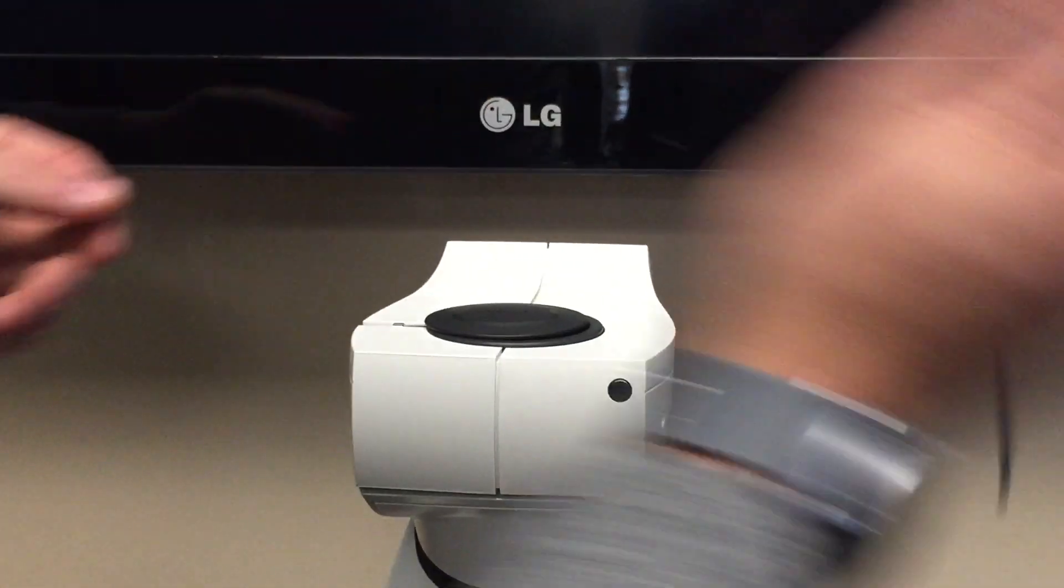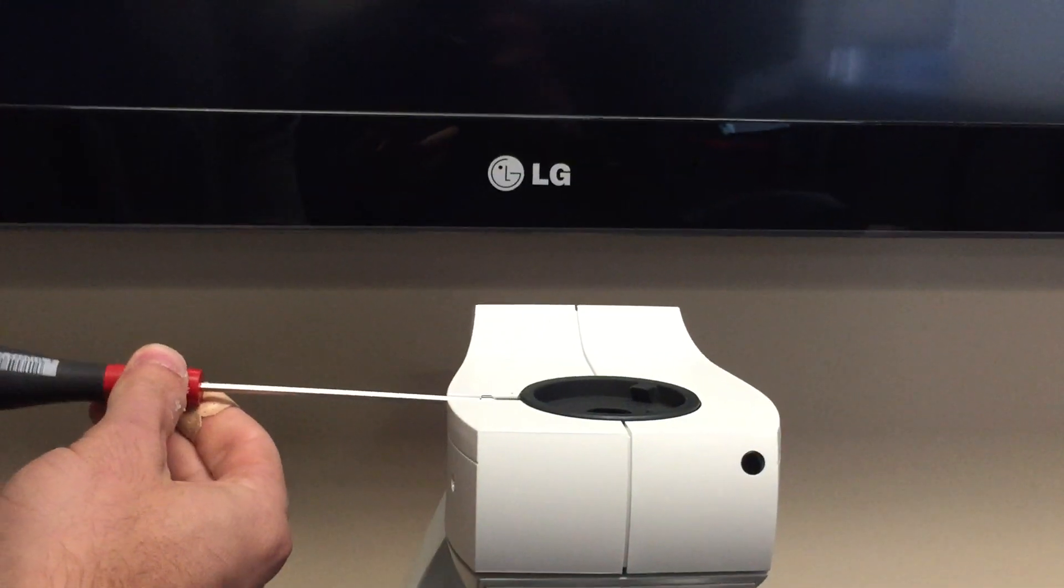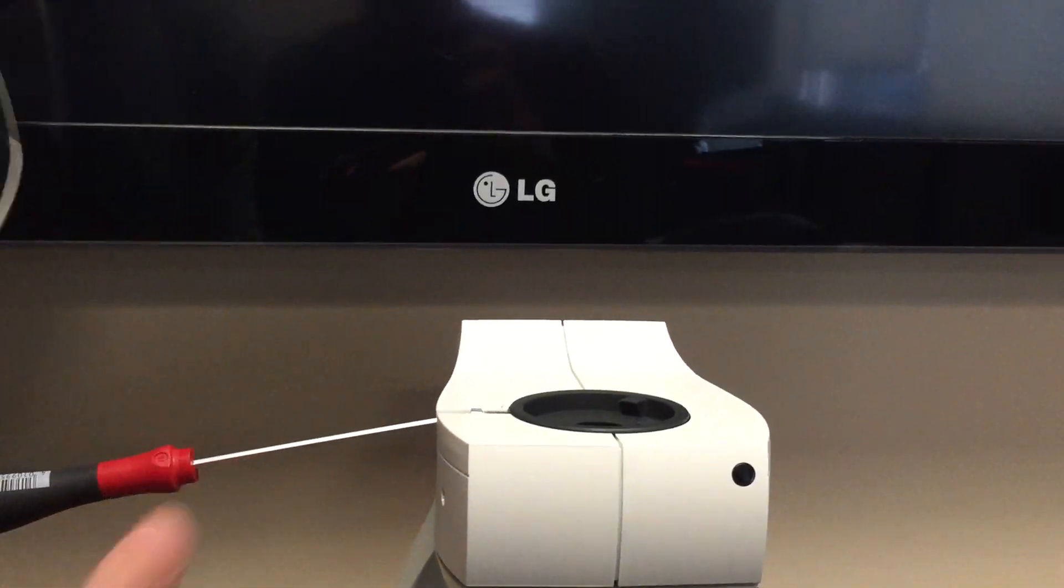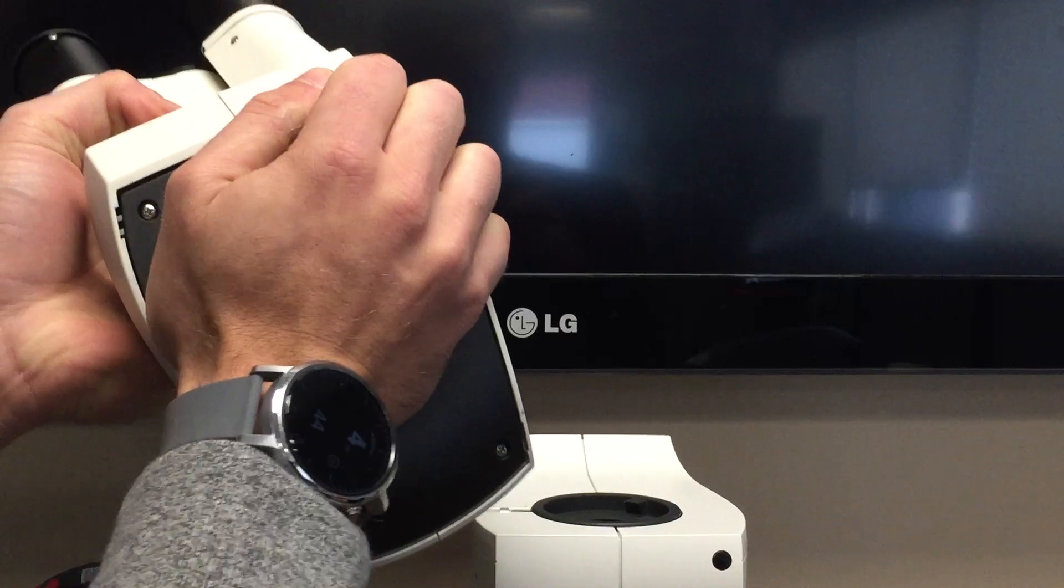From there, you'll do the same thing with the top cap, loosening the screw and removing the cap. You'll then take the viewing head and remove the bottom cap.